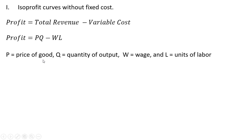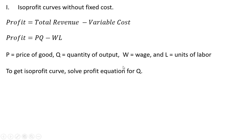So P is the price of the good, Q is the quantity of output, W is the wage, and L is units of labor. To get the isoprofit curve or equation, we're going to solve the profit equation for Q, the quantity.